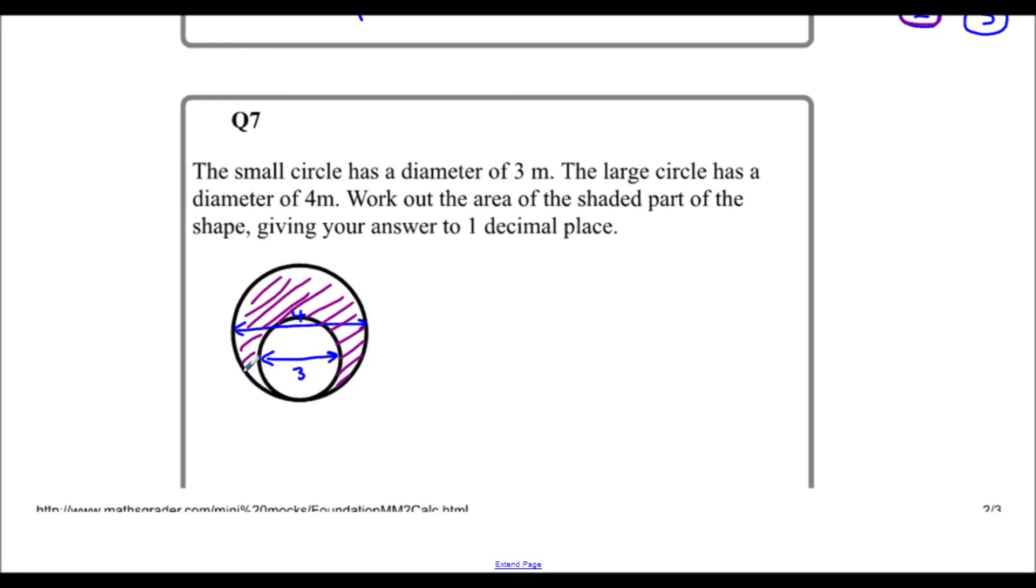So we're going to do the area of the big circle take away the area of the small circle. The area of a circle is pi times the radius squared, and a radius is half of a diameter. So for the small circle the radius is going to be 1.5 and for the big circle the radius is going to be 2.